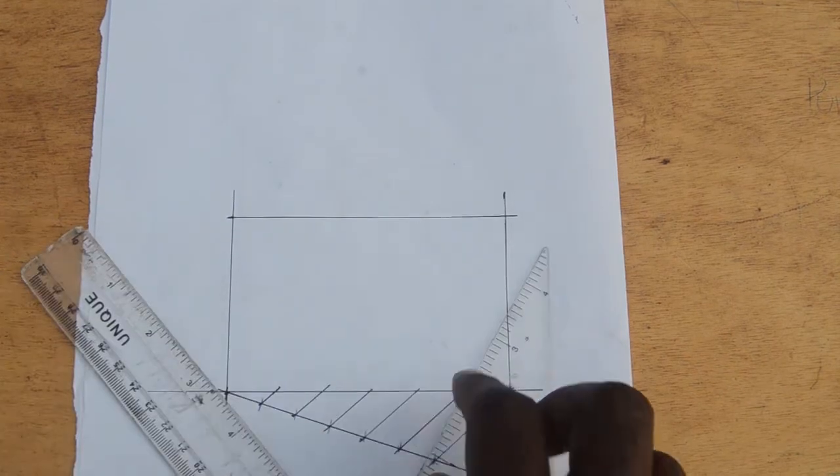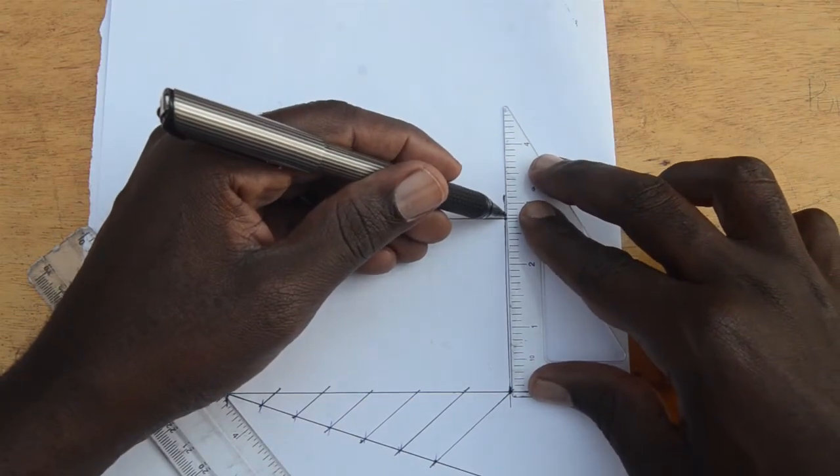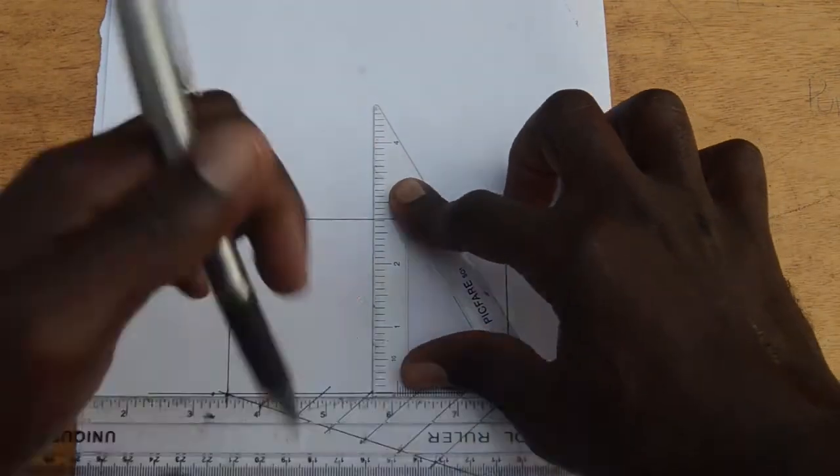When you divide into six, at the line of three, which is halfway, draw the middle axis line.